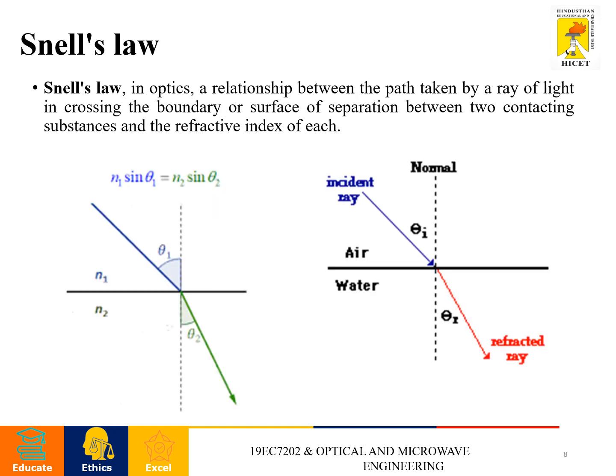Next one is Snell's law. Snell's law in optics is a relationship between the path taken by a ray of light in crossing the boundary or surface of separation between two contacting substances and the refractive index of each. Let us assume two different refractive indexes, N1 and N2. Here, N2 is the water medium and N1 is the air medium. This line indicates the separation or surface between the two different mediums. In Snell's law, theta 1 is the incident angle and theta 2 is the refracted angle. So, N1 sin theta 1 equals N2 sin theta 2. This is Snell's law.